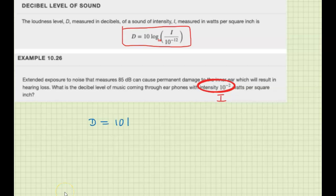All right, so let's plug it into that formula and figure out what the decibel level is. So D is 10 log of 10 to the minus 2 over 10 to the negative 12.